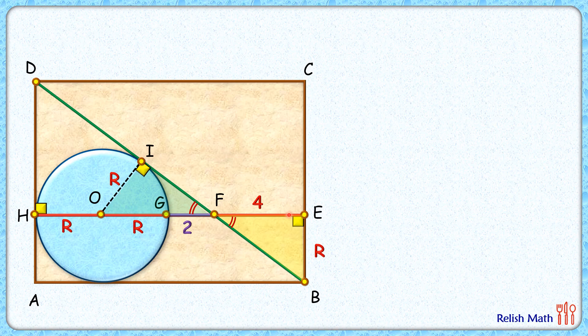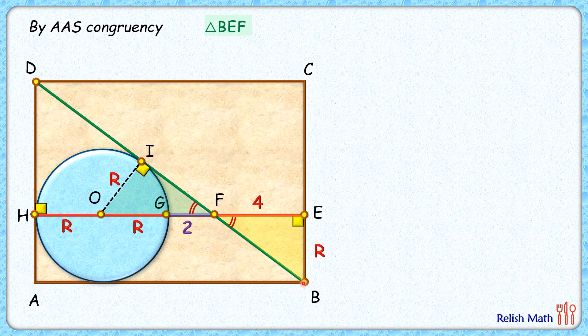Both have 90 degree angles, both have got side r centimeter, and thus by angle angle side congruency these triangles are congruent to each other. So triangle BEF is congruent to triangle OIF.